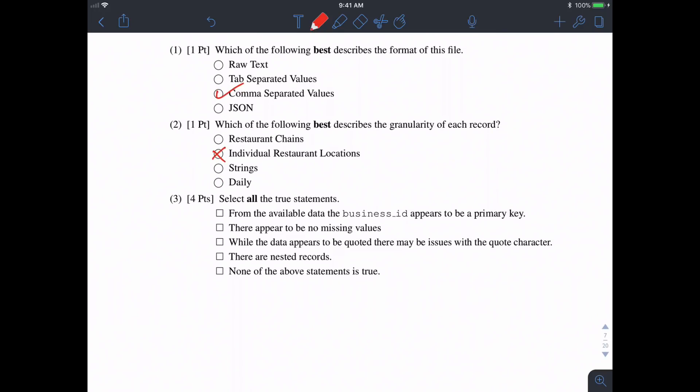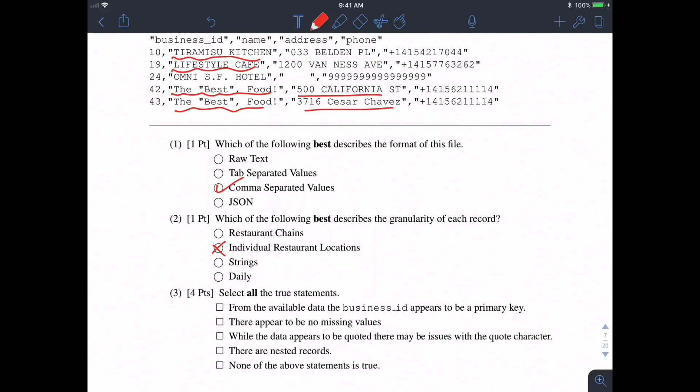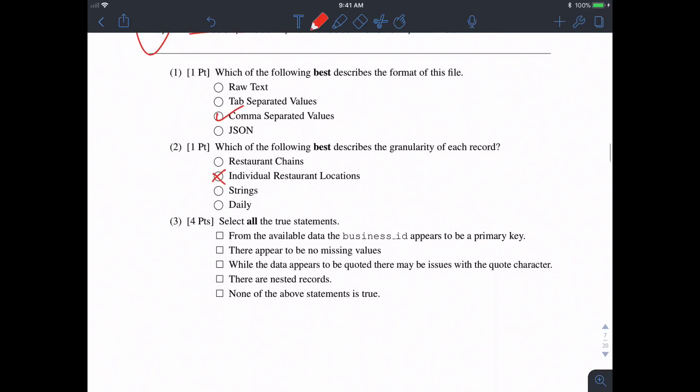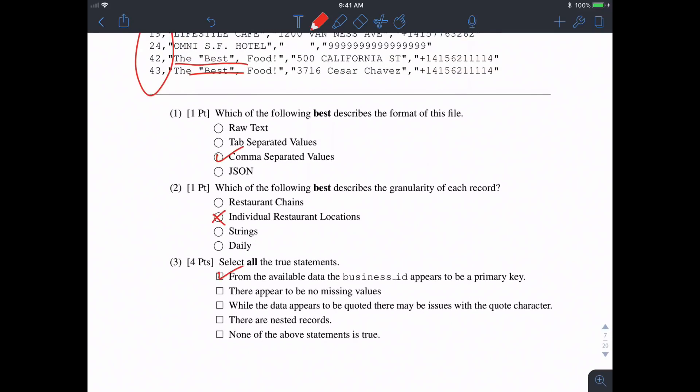Part 3: Select all true statements. Does the available data indicate that business ID is a primary key? Well, the phone number is repeated on two different rows, some entries don't have an address, and some entries have the same name. But business ID is unique for every row, so it looks like that is a primary key.